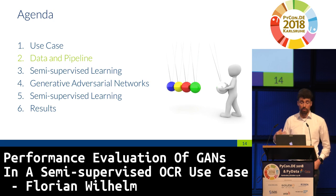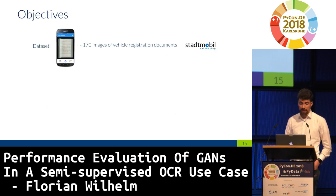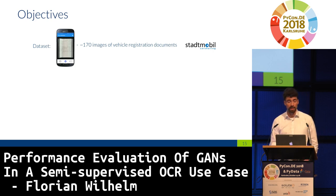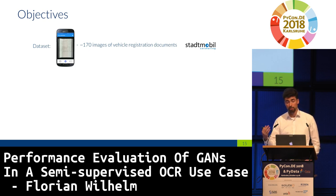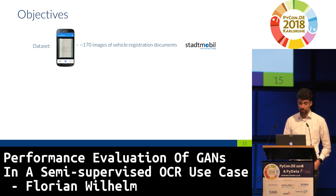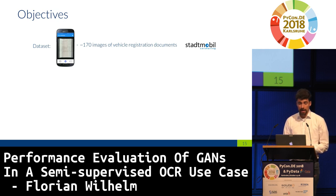That was the theoretical part. Now let's do something about it — let's get some data. Luckily we found Stadtmobil, which many of you from Karlsruhe will know. They gave us 170 images of their vehicle registration documents, which we're really grateful for, since not everyone just hands over their vehicle registration document. Still, 170 images is not that much. If you think about deep learning, it takes tons of data — ImageNet has more than one million images. So 170 is really not that much.